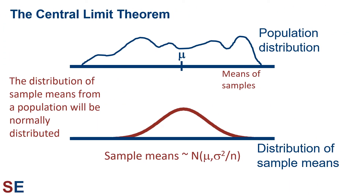Luckily, there's a mathematical result called the Central Limit Theorem. This theorem states that the distribution of sample means from a population will be normally distributed, no matter what the population looks like. So if we took a series of samples from the population and looked at the values of the means of those samples, they would form a normal distribution centered around the population mean.